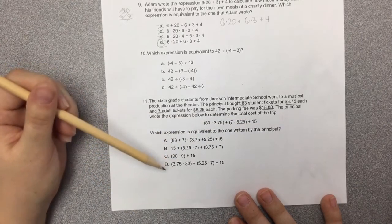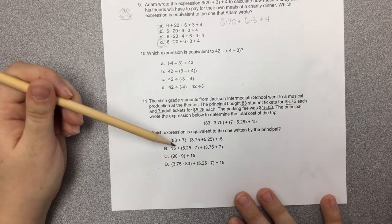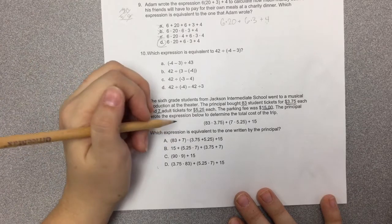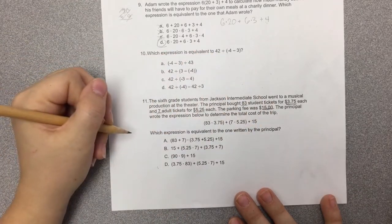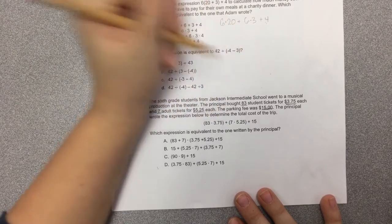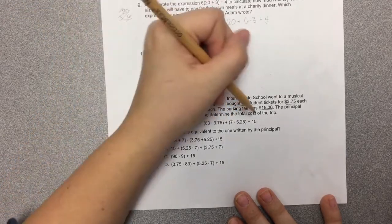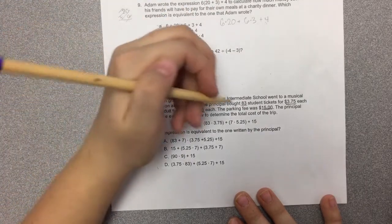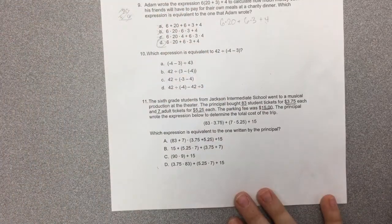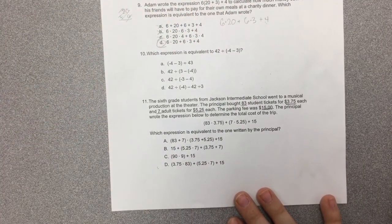We're going to find an expression that's equivalent to the one written by the principal. Now we looked at one very similar to this before. We are looking for one that is equivalent, so we need to make sure that we have our $3.75 multiplied by 83, our $5.25 multiplied by 7, and our $15. So we could go ahead and solve all the way out, or we could look for those different pieces within our different answer choices.